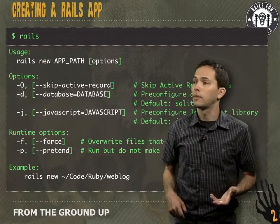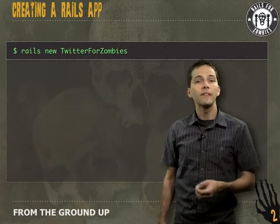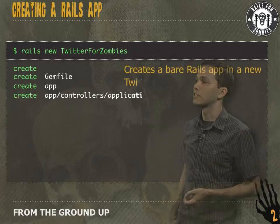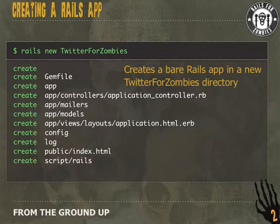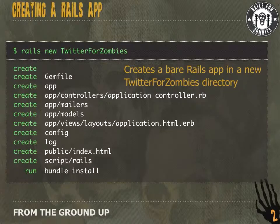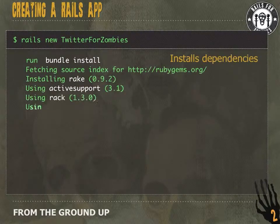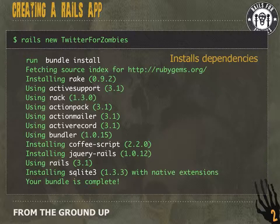Let's go ahead and create our first Rails app by running `rails new twitter-for-zombies`. When we run that command, it's going to create a bunch of files and directories. Some of these directories should look familiar from Rails for Zombies 1, like your controllers, models, and views directories. At the end, it's going to run `bundle install`, which goes out to the internet and downloads any external dependencies your Rails application depends on.